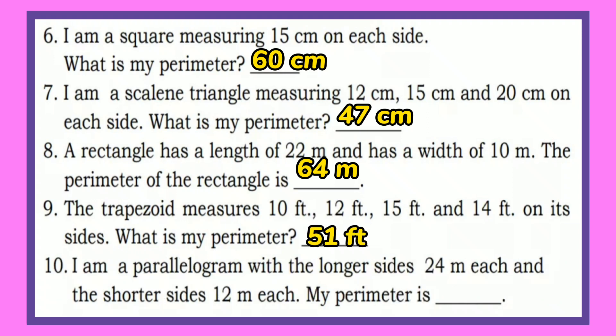Number 10: I am a parallelogram with the longer sides 24 meters each and the shorter sides 12 meters each. What is the perimeter? The perimeter is 72 meters.